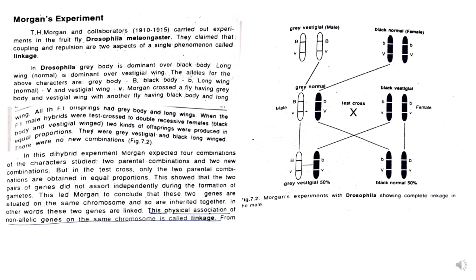When these F1 male hybrids were test crossed to a double recessive female having black body and vestigial wings, they expected progenies to be in the ratio of 1:1:1:1. But they obtained only two kinds of offspring, which were of parental types.